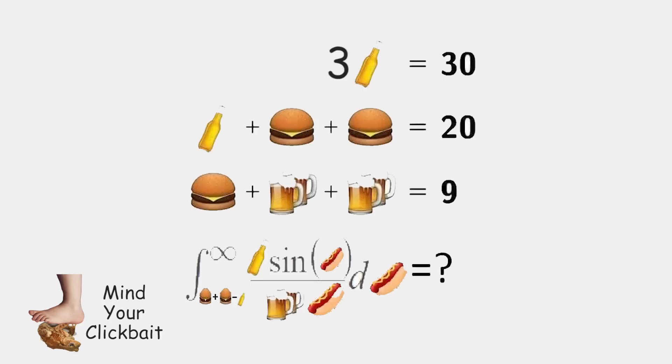That means we have 3 times the bottle being equal to 30. And now we can divide both sides by 3, because it's not equal to 0, to get a value for our piss bottle being 10.